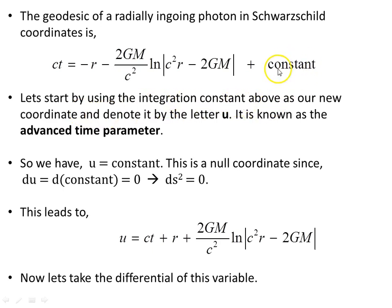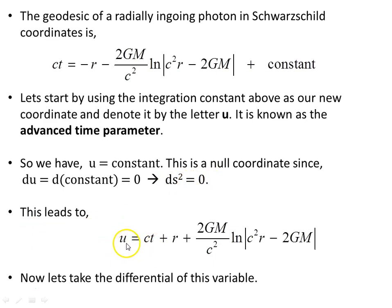Starting by using the integration constant as our new coordinate, denoted by the letter u, this is known as the advanced time parameter. We have u equals constant, and this is a null coordinate since du equals zero. This implies that if we're holding theta and phi constant, then ds squared will be zero. This leads to the coordinate u being: ct plus r plus a constant times the log of this object.